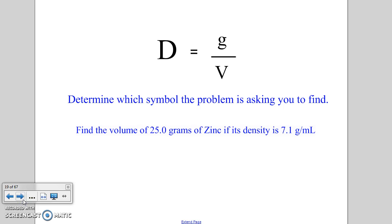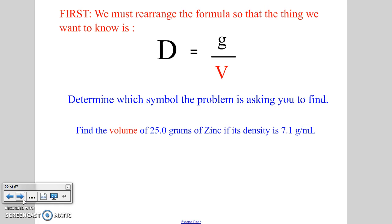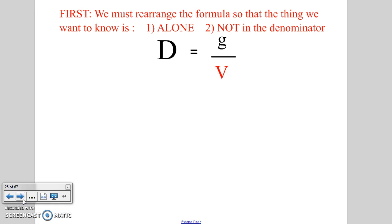We're looking to find the volume, so V is what we're looking for. We must rearrange the formula so that the thing we're looking for, the V, is two things: one, it's alone - notice it's not alone right now, it's on the same side of the equation with the g. And secondly, we cannot have it in the denominator. Right now it is in the denominator. That's a problem.